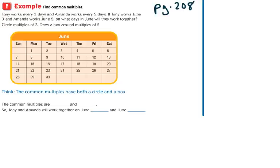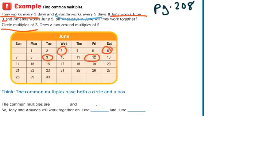Turn to page 208. It says: Tony works every 3 days and Amanda works every 5 days — Tony is red and Amanda is blue. If Tony works June 3rd and Amanda works June 5th, on what days in June will they work together? Circle the multiples of 3 and draw boxes around the multiples of 5. So Tony starts on the 3rd: 3, 6, 9, 12, 15, 18, 21, 24, 27, 30.